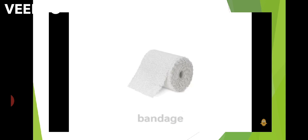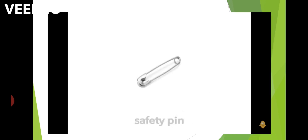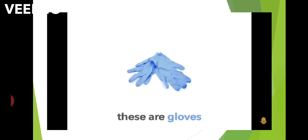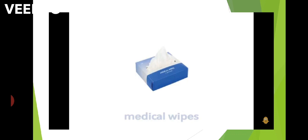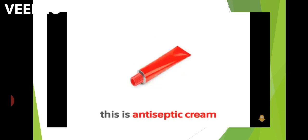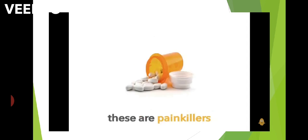And tell me what the first aid kit contains? Bandage, plaster, scissors, safety pin, gloves, medical wipes, cough medicine, antiseptic cream, painkillers. These are the things that a first aid kit contains.